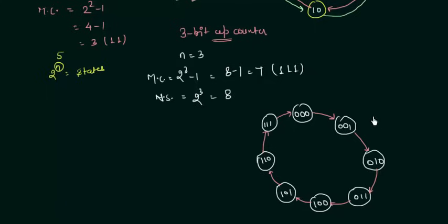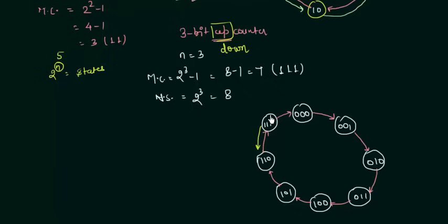This is all for this presentation. If you want the down counter — if up is replaced by down — you just change the arrows. You start from 1 1 1, then go to 1 1 0, and all the way back to 1 1 1. So this is what we do in case of down counters.